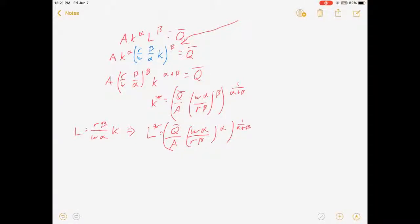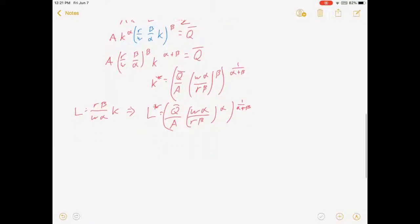So from there, if I want to solve for my exact costs, I can. Where c of K star comma L star is just equal to R times K star plus W times L star. Substitute those values in, and I will get an actual number of how much it costs to produce Q bar.